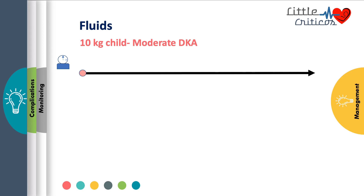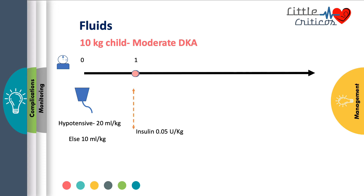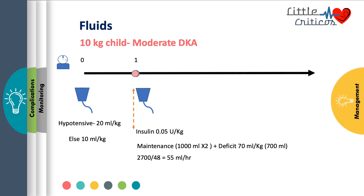Let us understand these principles through a case example. Assume a 10 kg child is brought with moderate DKA. At admission (0 hours), if the child is hypotensive, we start a bolus of 20 mL per kg; if not, a bolus of 10 mL per kg given over 1 hour. At the end of 1 hour, we reassess and start insulin at 0.05 units per kg per hour, simultaneously initiating maintenance fluids. For this 10 kg child, maintenance fluid over 48 hours is 2000 mL. Adding a deficit of 70 mL per kg for moderate dehydration, the total rate works out to 55 mL per hour, with potassium at 40 mmol per liter added after ensuring urine output.